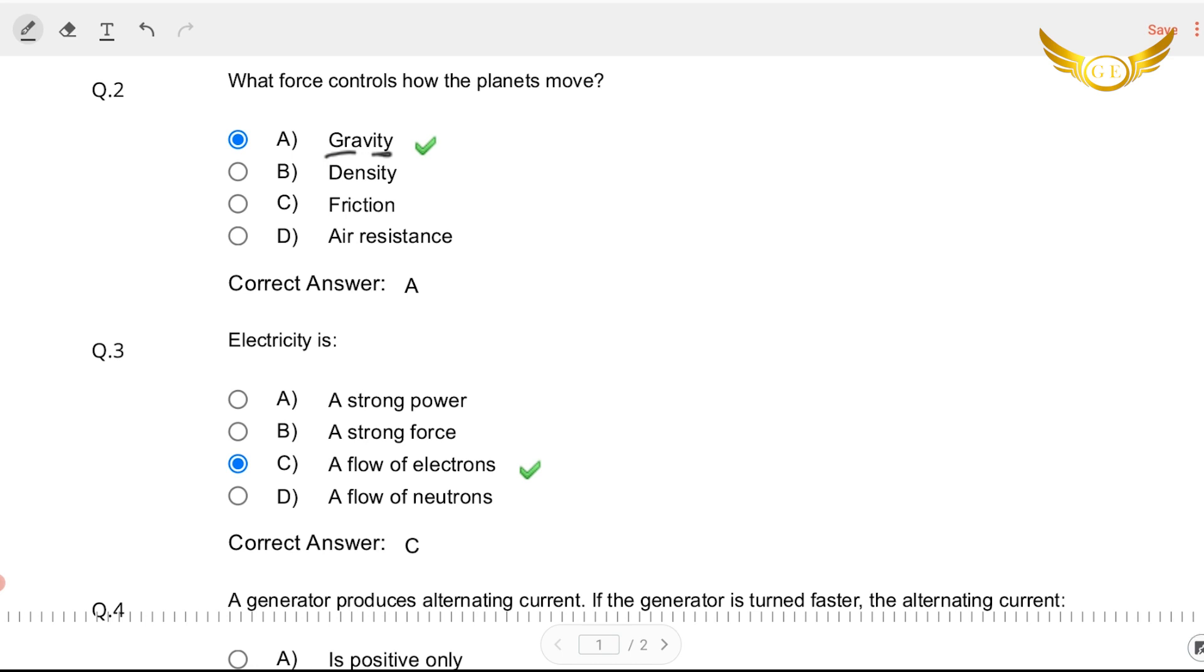Number two. Electricity is a strong power, a strong force, a flow of electrons, a flow of neutrons. Well it is quite easy, it is a flow of electrons. So C is the right answer.